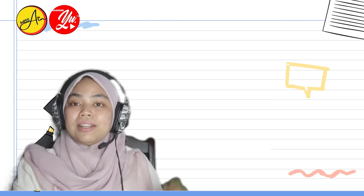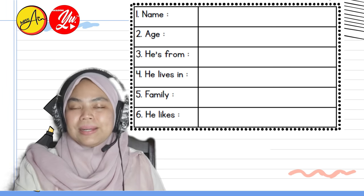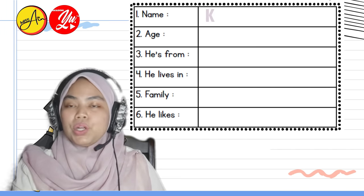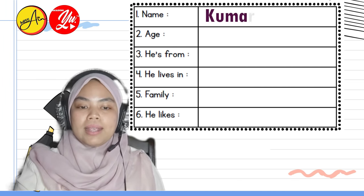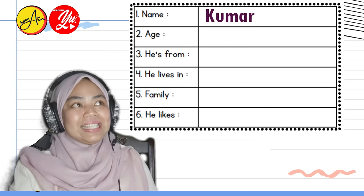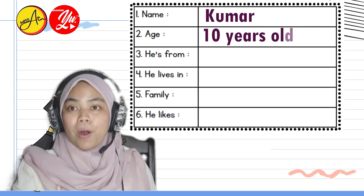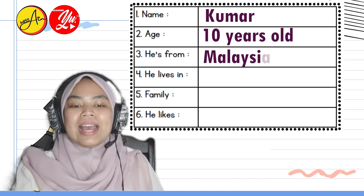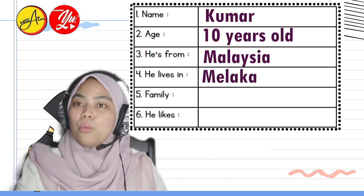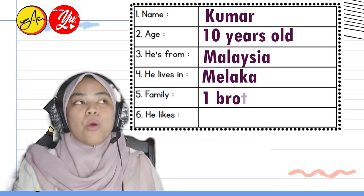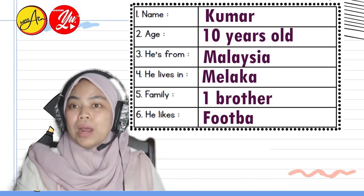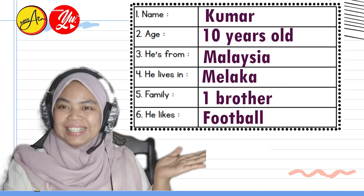Hello again! Have you filled in the form? Let's check your answers. Name — Kumar. Just write 'Kumar'; you don't have to write 'his name is Kumar' or 'my name is Kumar.' Age — ten, or ten years old. He is from — Malaysia. He lives in — Melaka. Family — one brother. He likes — football. It's a one-word answer. Have you got all correct? Good job!